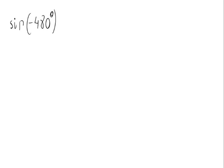Let's calculate the sinus of minus 480 degrees. We can see that we have the sinus of a negative angle. The sinus of minus alpha, minus an angle, is equal to minus the sinus of alpha. The minus sign can go outside.